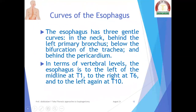The curves of the esophagus are an important anatomical fact which determines the surgical approach. The esophagus has three gentle curves: in the neck, behind the left primary bronchus below the bifurcation of the trachea, and behind the pericardium. In terms of vertebral levels, the esophagus is to the left of the midline at T1, to the right at T6, and to the left again at T10.